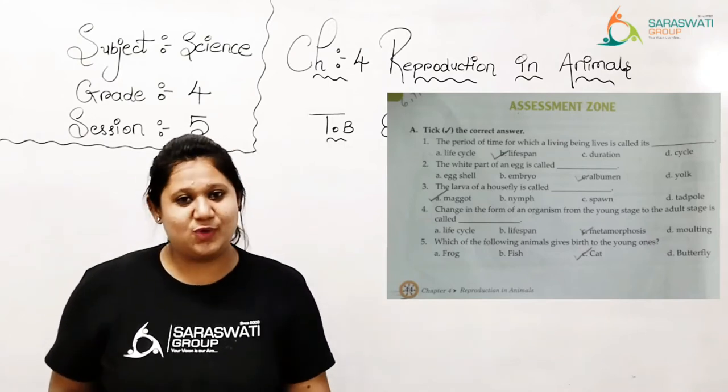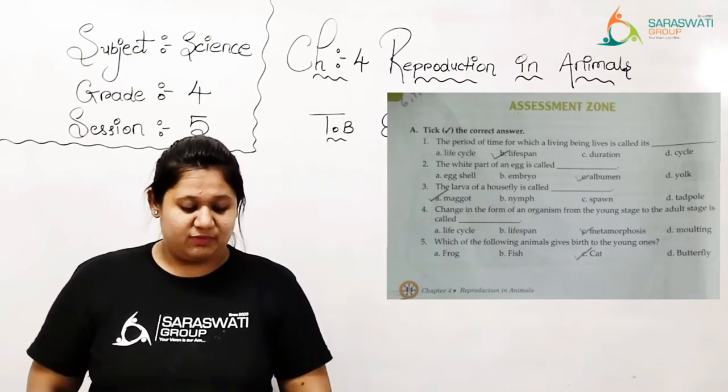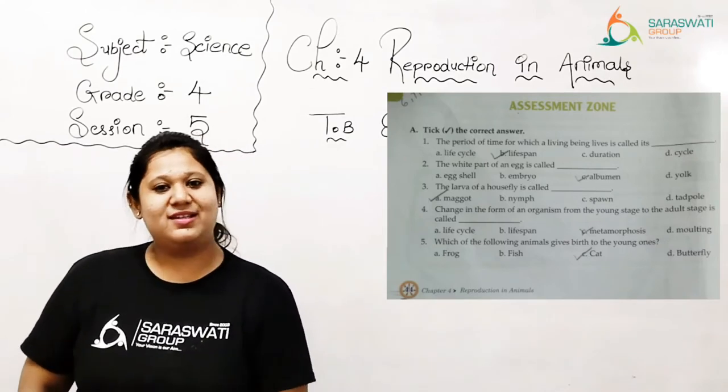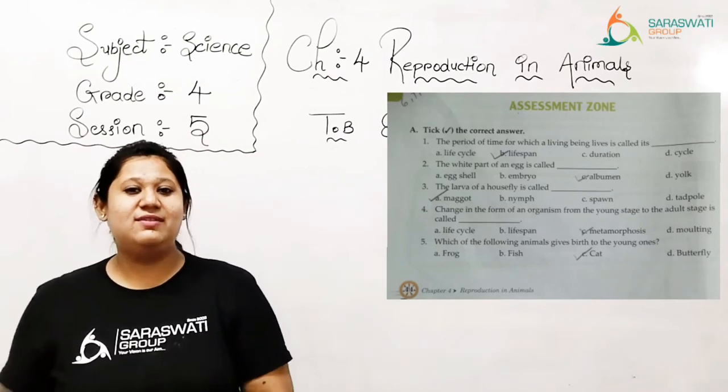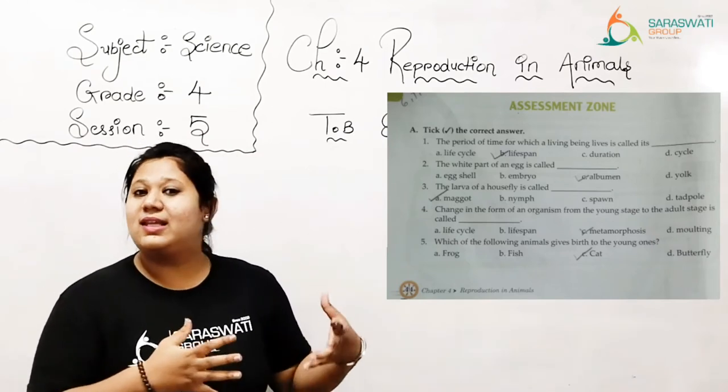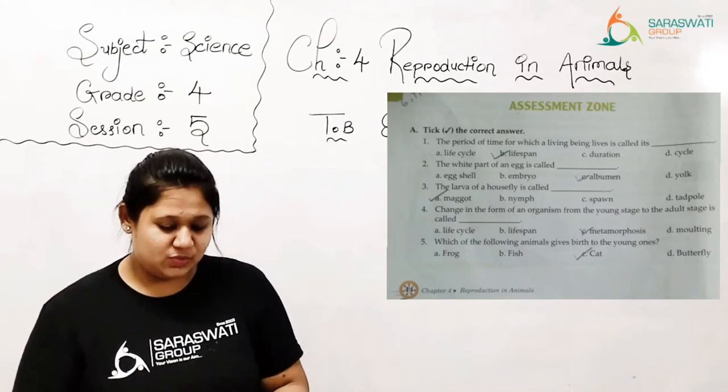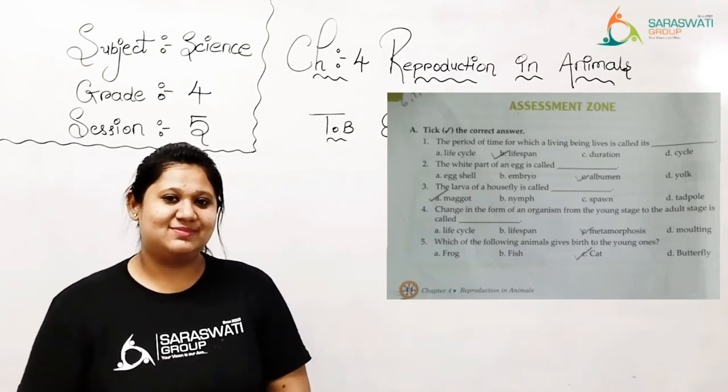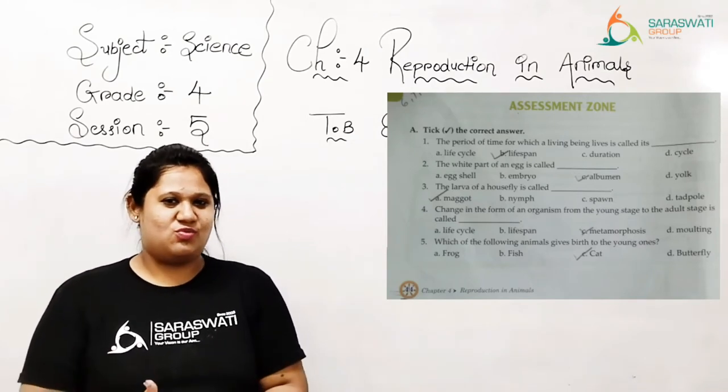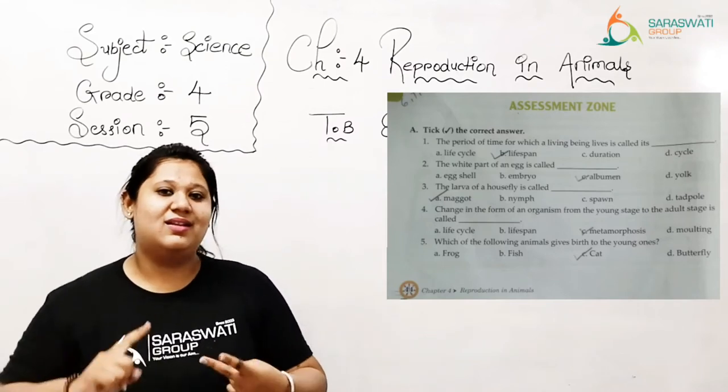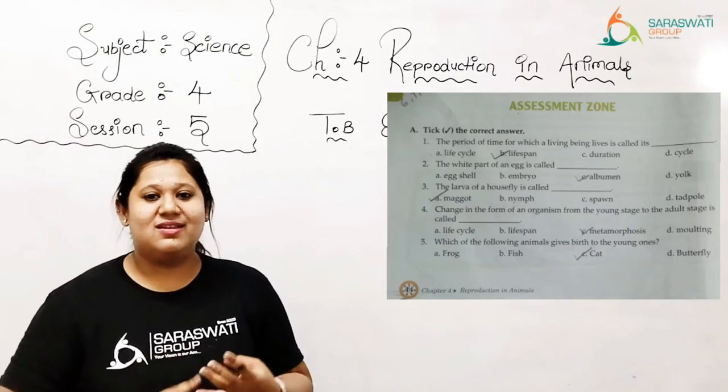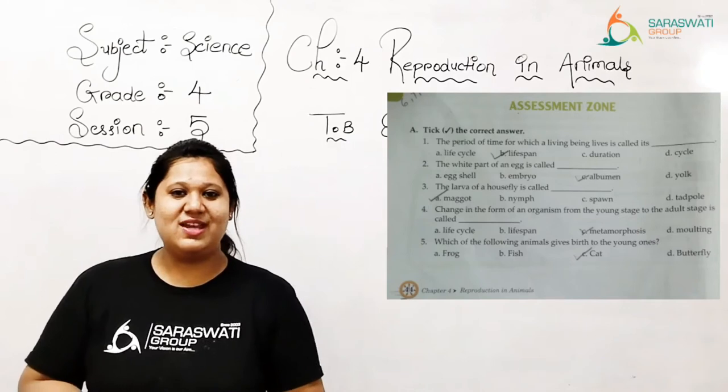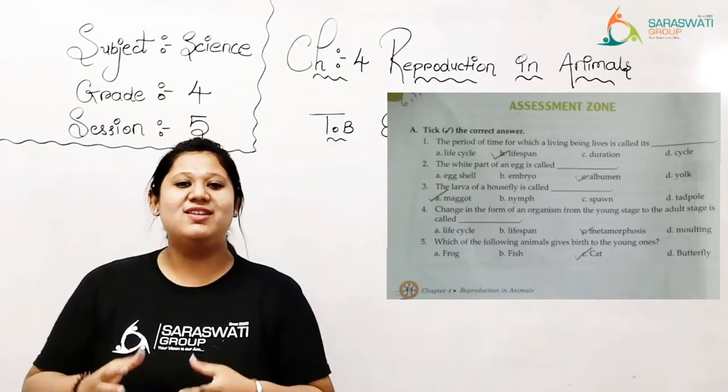Now number 4: change in the form of an organism from the young stage to the adult stage is called. This is so easy. If we find something changed between the young stage to the adult stage, then what is it called? Without options, I think you know: life cycle, life span, metamorphosis, young adult. Yes, our answer is metamorphosis, right? We are supposed to tick on C. Done.